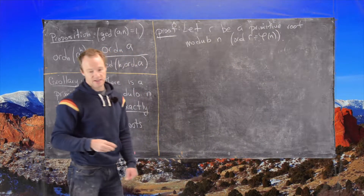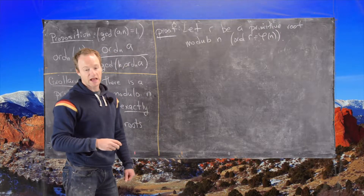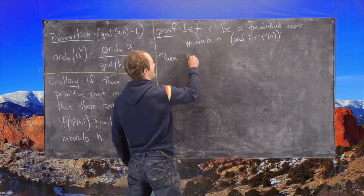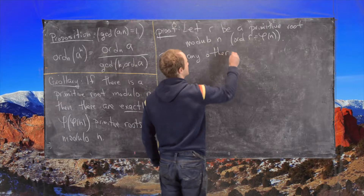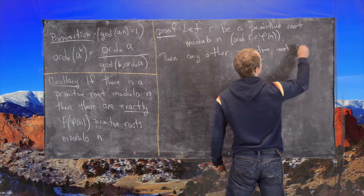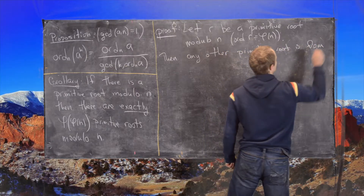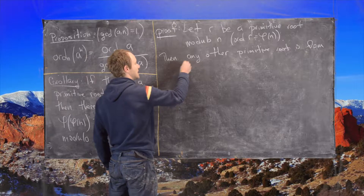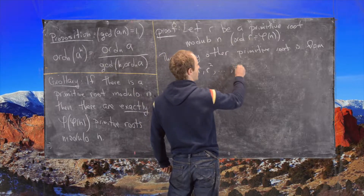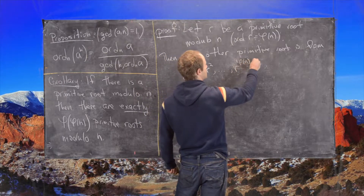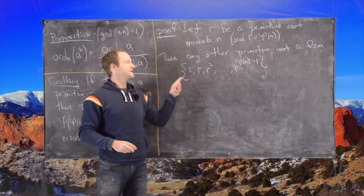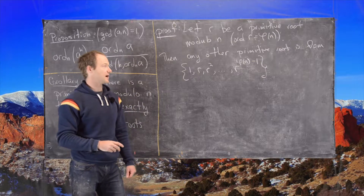Any other primitive root comes from the following set: {1, r, r², ..., r^(φ(n)−1)}. If we recall, this set is another way of writing the group of units modulo n.